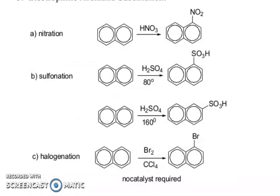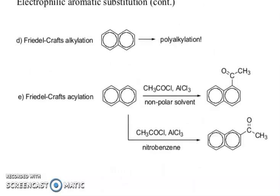Nitration gives 1-nitronaphthalene. Sulfonation gives 1-naphthalenesulfonic acid at lower temperature, and 2-naphthalenesulfonic acid at higher temperature. Halogenation (bromination) occurs at the 1-position. Friedel-Crafts alkylation and Friedel-Crafts acylation: in the case of Friedel-Crafts alkylation, polyalkylation products are obtained.